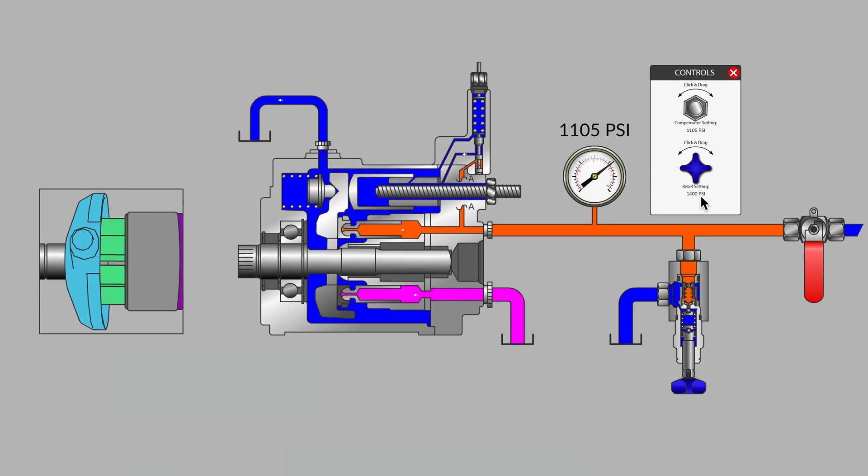Some hydraulic systems set that relief valve only 150 psi higher than the pressure compensator. It is always best to check your machinery manual and find out what the manufacturer recommends for the settings on your hydraulic system.